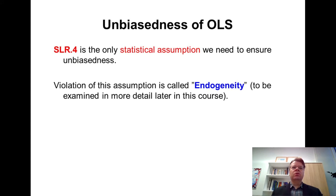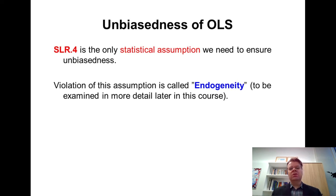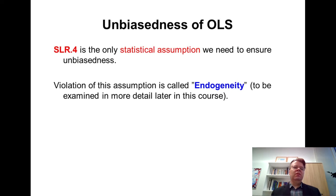It's important to clarify which assumptions are needed for which property — so that if an assumption fails, we know which properties are violated. We will return to the endogeneity condition later in this course, because in many economic applications, the assumption of zero conditional mean — that the explanatory variable is uncorrelated with epsilon — may be violated. In such contexts, we worry about endogeneity bias. If zero conditional mean is violated, we have a biased estimate.